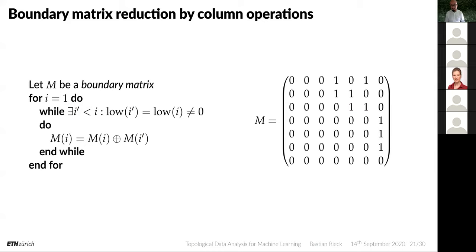Let's take a look at how this works. We look at the matrix and find two columns where the lowest one in each is the same. The column that precedes gets added to the other modulo two coefficients — the one gets canceled and a value gets transferred. Then we find another such pair: these two columns have the same lowest entry, so we add them together and they cancel each other out completely — the column vanishes. We have no other such columns remaining, so we obtain a reduced boundary matrix.